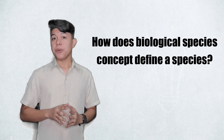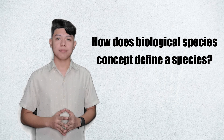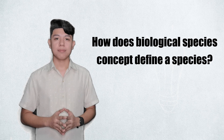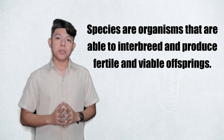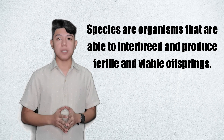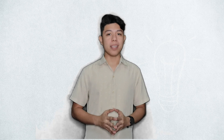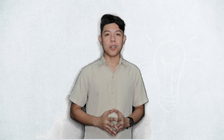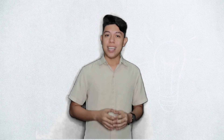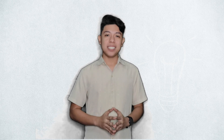Let me check if you remember today's lesson. How does the biological species concept define species? Species are organisms that are able to interbreed and produce fertile and viable offspring. I hope that learning the types of speciation and reproductive isolation mechanisms will help you understand why some species look the same in certain characteristics and help you appreciate creatures with endless forms. Once again, I am Teacher Neil — always remember to carry on, have fun, be kind, and amazing things will happen.